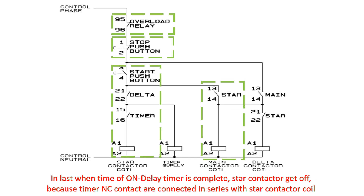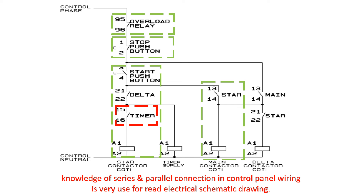Finally, when the time of the on-delay timer is complete, the star contactor turns off because the timer NC contacts are connected in series with the star contactor coil. Knowledge of series and parallel connections in control panel wiring is very useful for reading electrical schematic drawings.